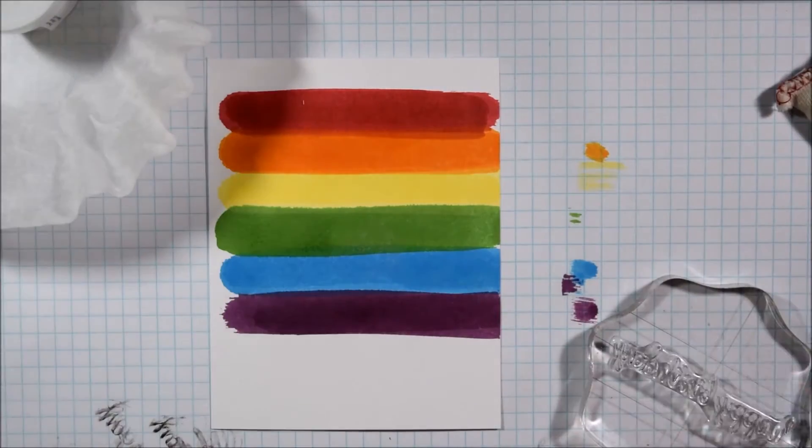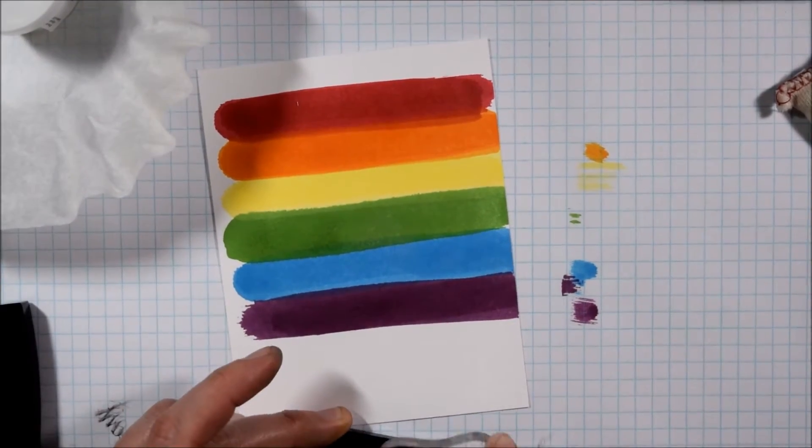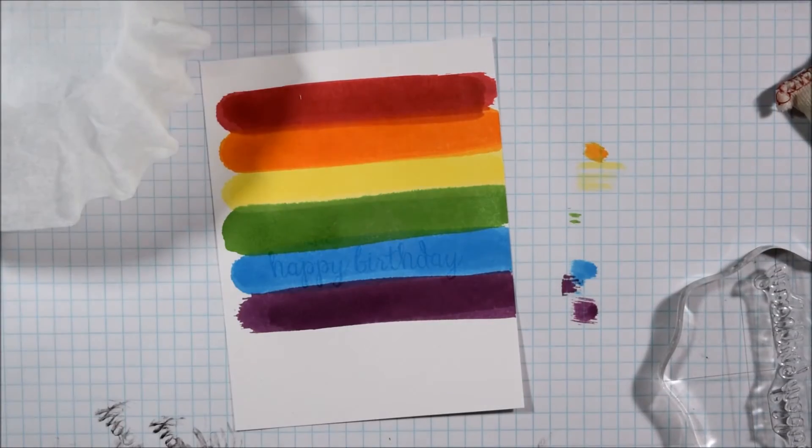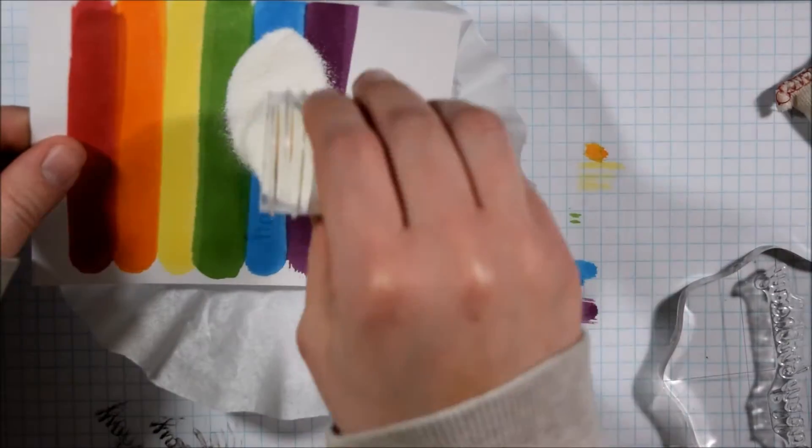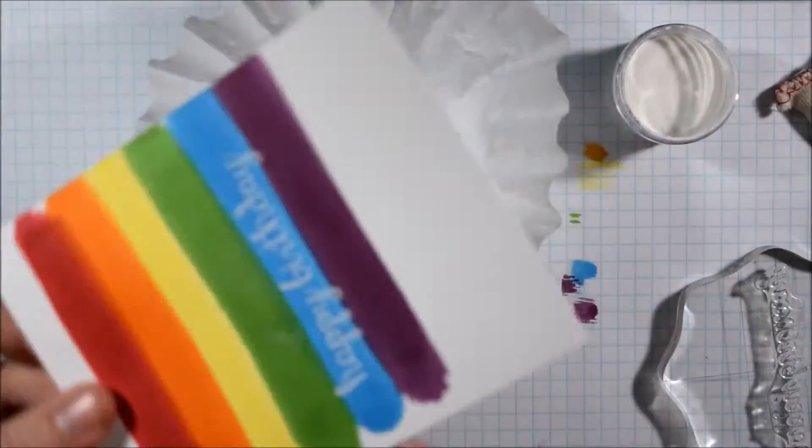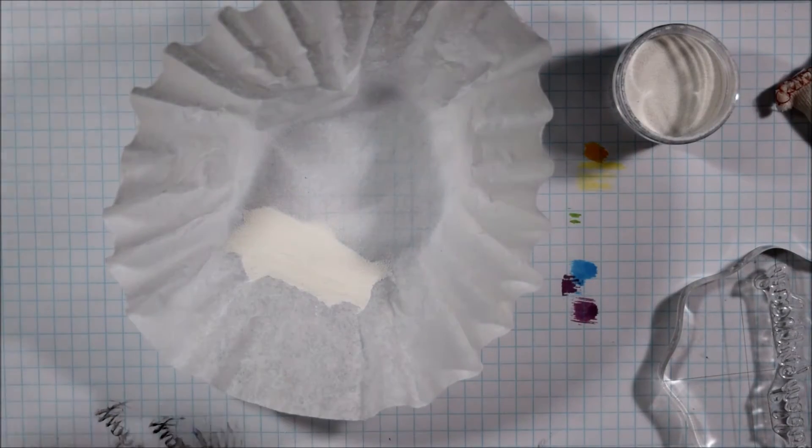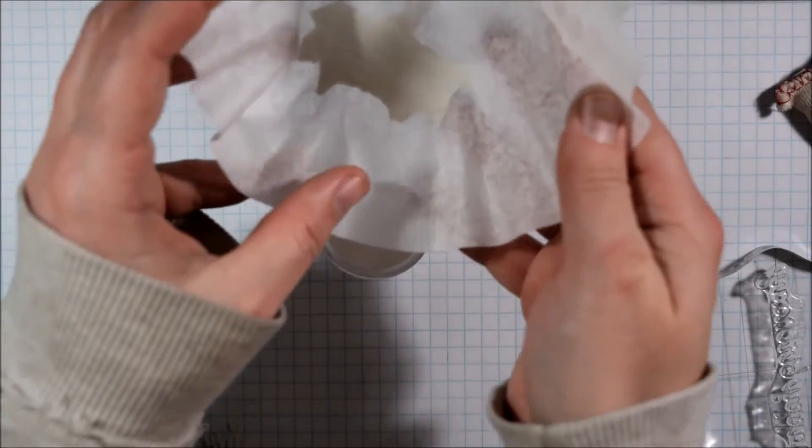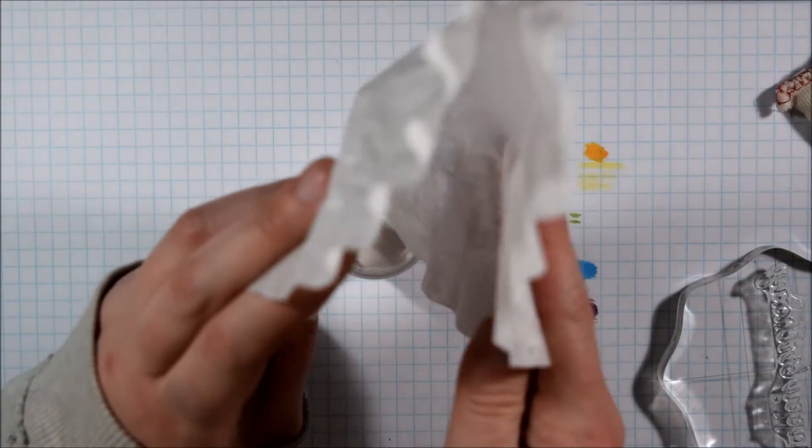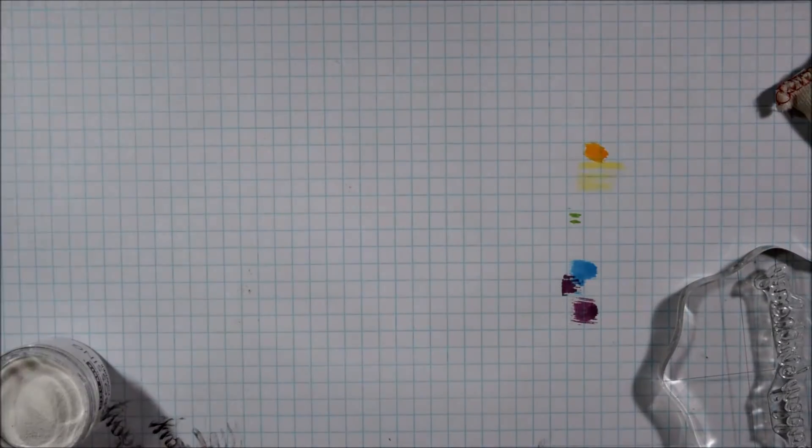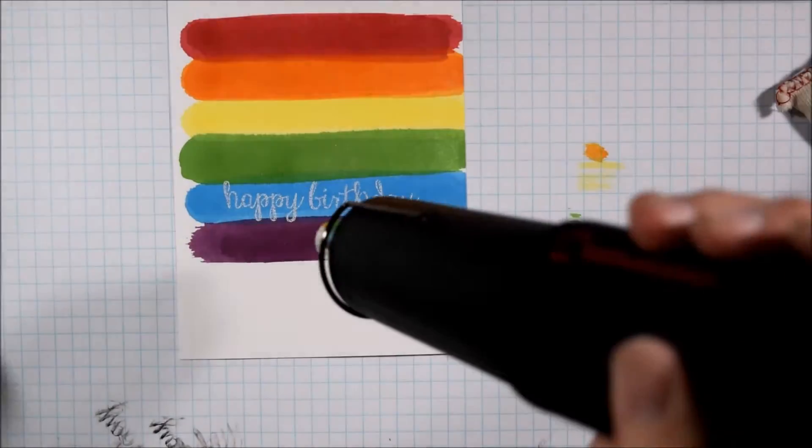Once I had my rainbow stripes going I decided to stamp the sentiment happy birthday. I stamped it one time with the Versamark because I'm going to do some heat embossing. So I used the powder bag, made sure everything was dry because distress stains are a wet medium, stamped it with the Versamark and then I sprinkled some Hero Arts white embossing powder over the happy birthday. And this is so that this will be like the main sentiment that stands out.